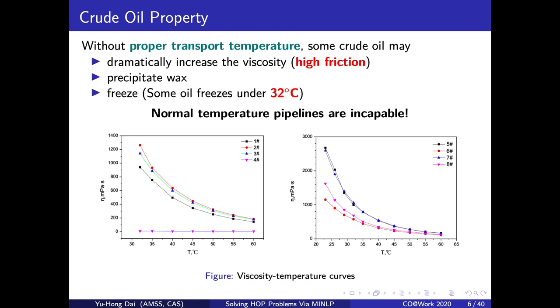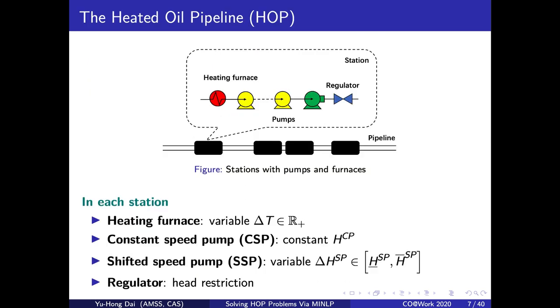Different crude oil may have different properties. Without proper transport temperature, some crude oil may dramatically increase the viscosity or precipitate wax. Actually, crude oil may freeze under 32 degrees. All these properties will lead to high friction and therefore slower the transport, or even make it stopped. So the normal temperature pipelines are incapable for the transport of this kind of oil. To handle this, people add heating furnaces in the pump stations to make the pipeline into a heated oil pipeline. It can keep the oil stay at a relatively high temperature level so that the oil can easily go through.